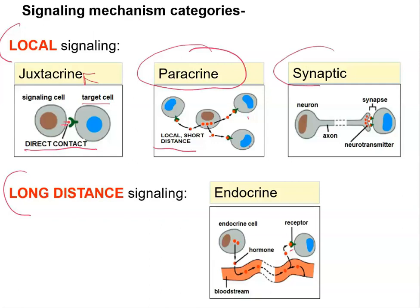Synaptic signaling involves a neuron releasing neurotransmitters into the synaptic cleft, and the target cell — which has receptors — responds accordingly. Long-distance signaling is basically the endocrine system: cells release hormones into the bloodstream, and the hormones circulate throughout the blood until they eventually reach target cells, which respond accordingly.